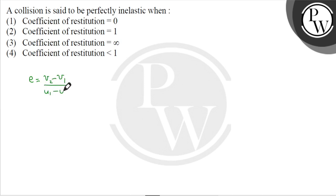So if the collision is perfectly inelastic, it means the velocity of separation becomes zero. That means both particles stick together and move together. This means the value of e will be zero upon u1 minus u2, which equals zero.